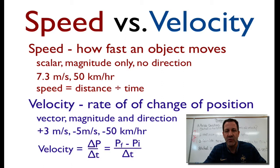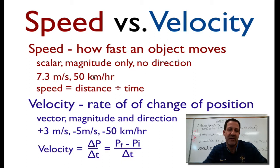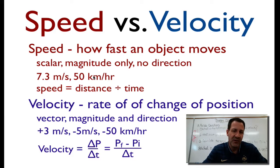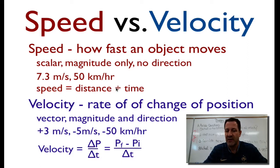Speed is how fast an object moves. Speed is a scalar, which means you describe it with its magnitude only — no direction. Here are some examples of speeds: 7.3 meters per second, 50 kilometers an hour. We don't know which way they're going — north, south, east, west, up, down. It's just how fast. Speed is calculated by taking the distance divided by the time — the total distance divided by the total time.